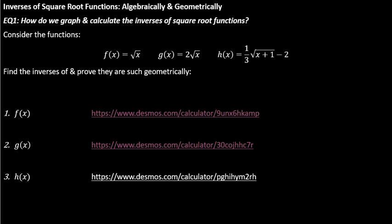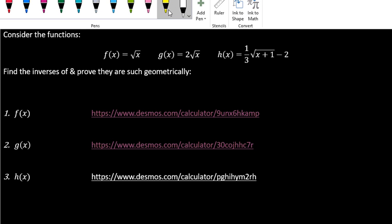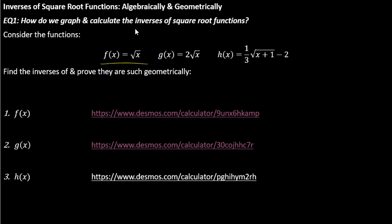So first let's go ahead and find the inverse of f of x. I'll do this in yellow. So if f of x equals the square root of x, I can do the flip and just say that x equals the square root of f. I'm going to have to square both sides, which gives me x squared equals f inverse of x.